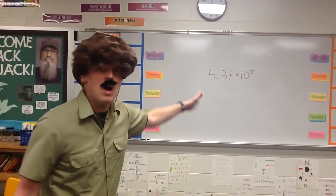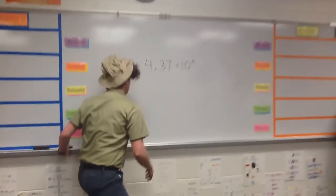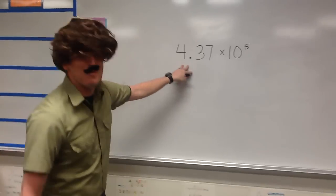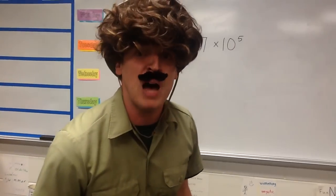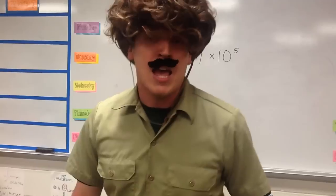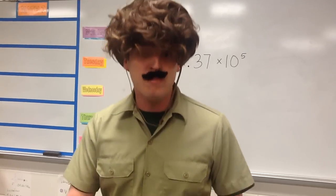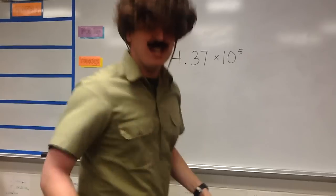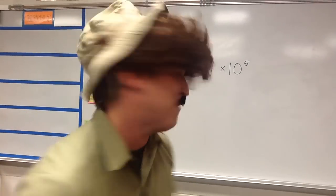Oh! There it is! Come hither to the problem! I have the problem: 4 and 37 hundredths times 10 to the 5th power. One real saying that I say down under in Australia is you take the little number and you move along from down under. The little number is the 5. What's the little number? Good job! It's the 5!